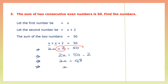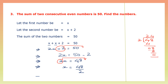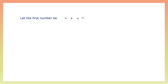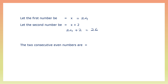Now let's find the value of x. x equals 48 divided by 2 because the 2, which is multiplication, becomes division when transposed. So x equals 24. We found the first number to be x, which is 24. The second number is x plus 2, that is 24 plus 2, which is 26. So the two consecutive even numbers are 24 and 26.